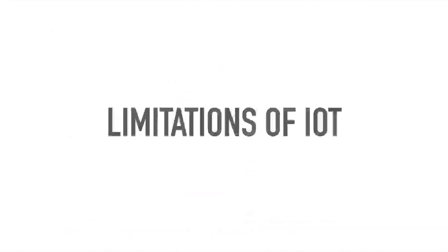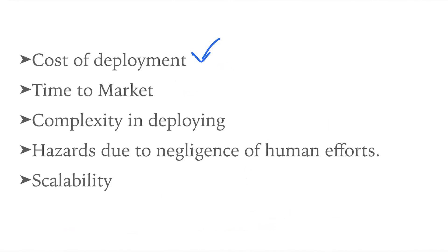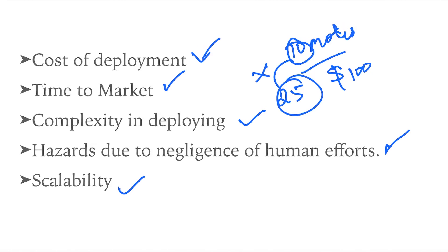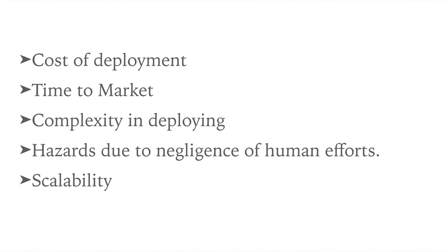The limitations of IoT include: costly deployment — even a small agricultural field needs at least 10 motes at roughly $100 each, totaling $1,000; time to market — deployment cannot be done instantaneously; complexity in deploying — it's not a simple network to configure; hazards due to negligence of human oversight — a dead or malfunctioning sensor node can be hazardous; and scalability issues — scaling from 10 to 25 motes introduces additional problems.